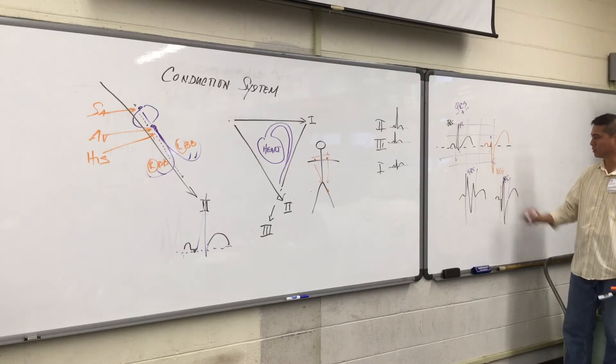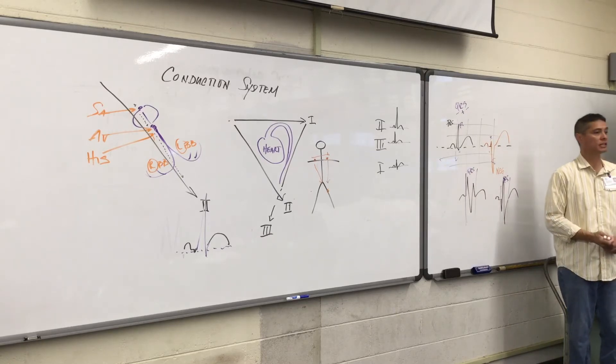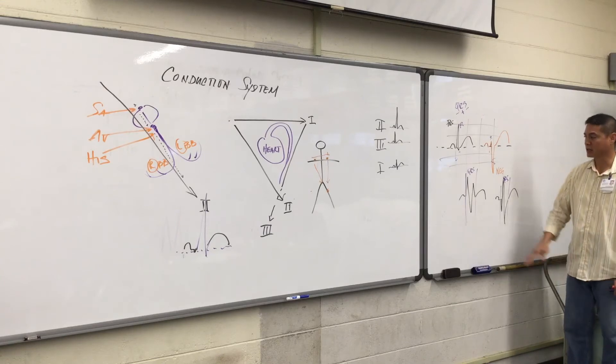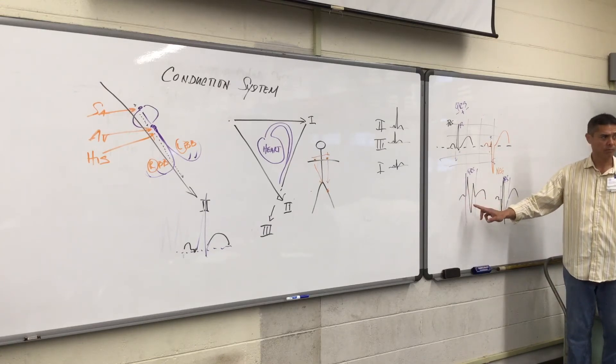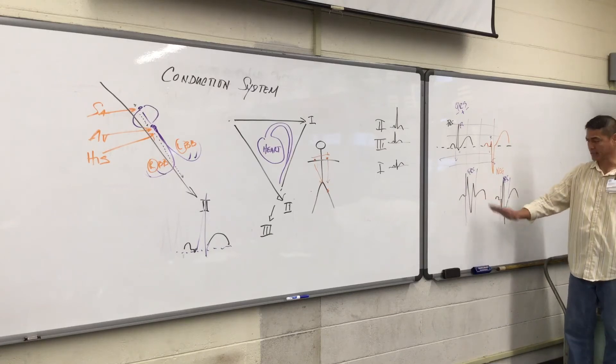And for now, there really isn't much rationale to give you at this point of your training. It's just to understand that we have a P wave, a PR interval, a QRS, and a T wave.